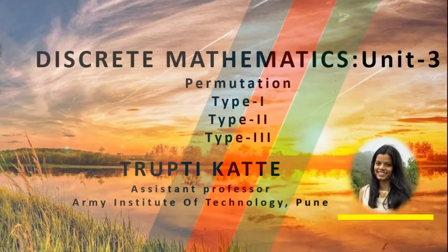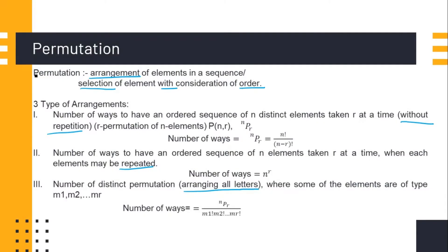In this video we are going to learn about permutation and 3 different types of permutation. Permutation is an arrangement of elements in a sequence, or we can say if you are selecting elements from a set while considering the order, then that is called a permutation.